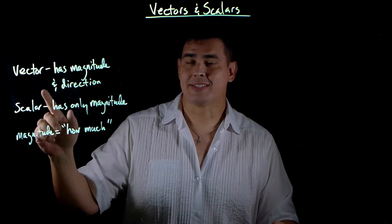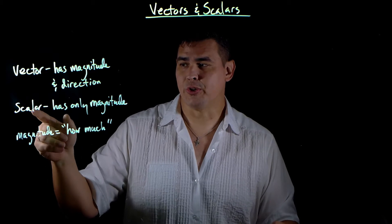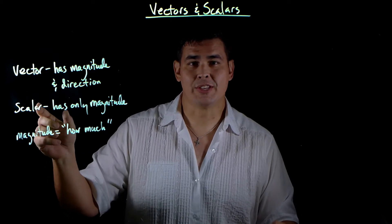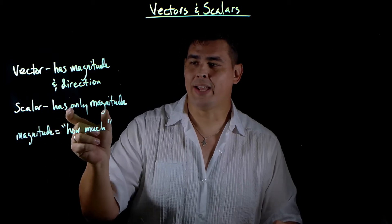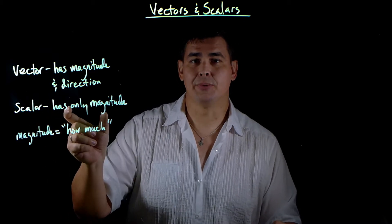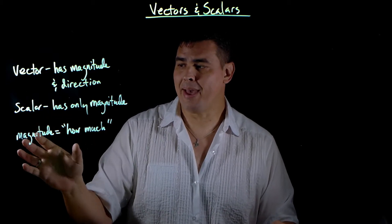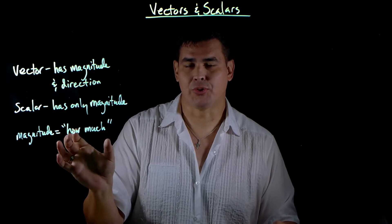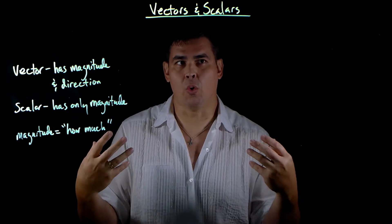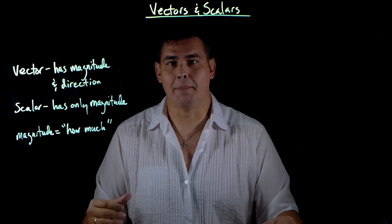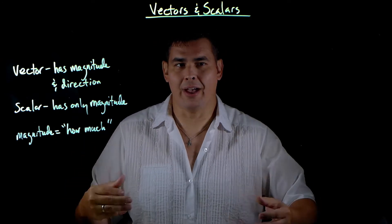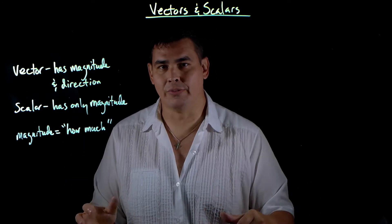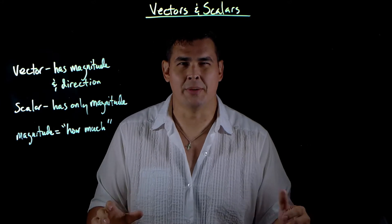A scalar is what you're used to. A scalar is a number that only has a magnitude. When we say magnitude, it means how much — it's the quantity of it. So, the magnitude of your height or the magnitude of your weight — those are just numbers.